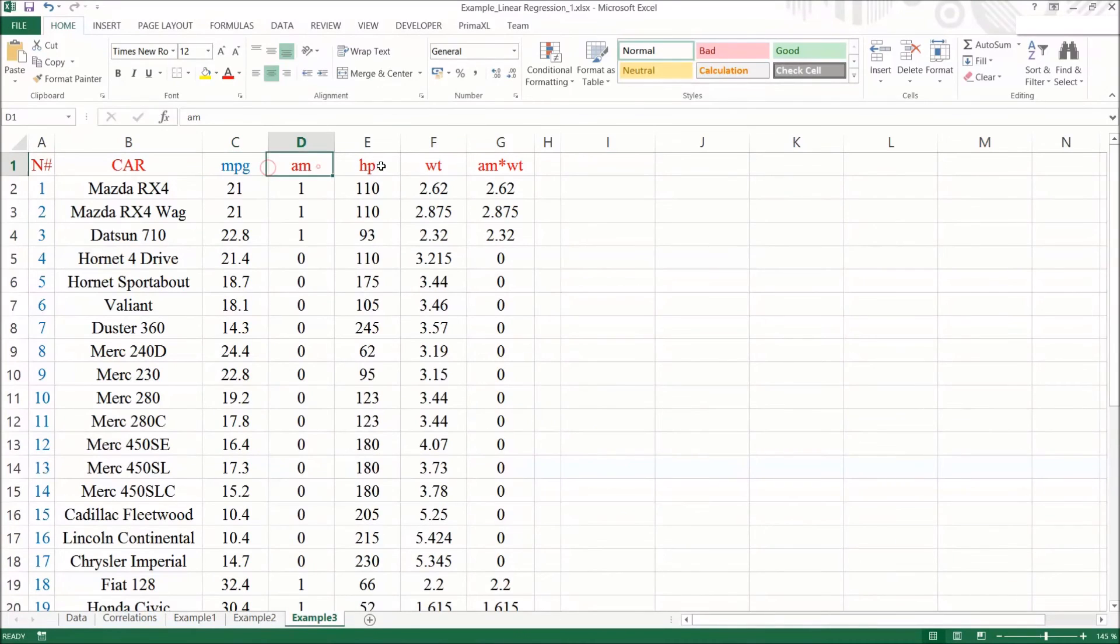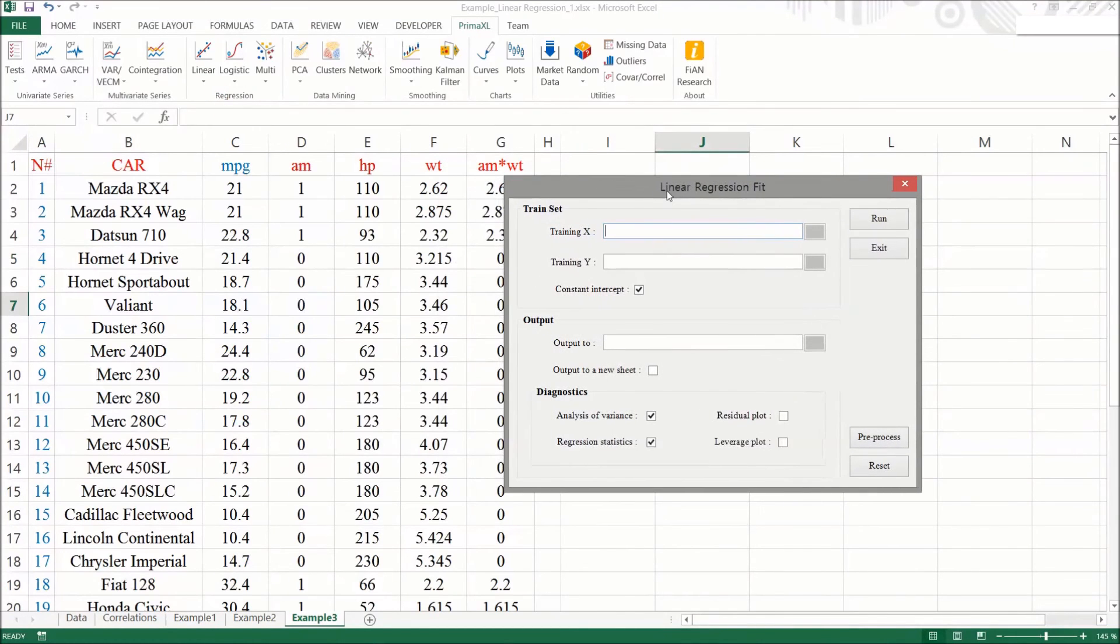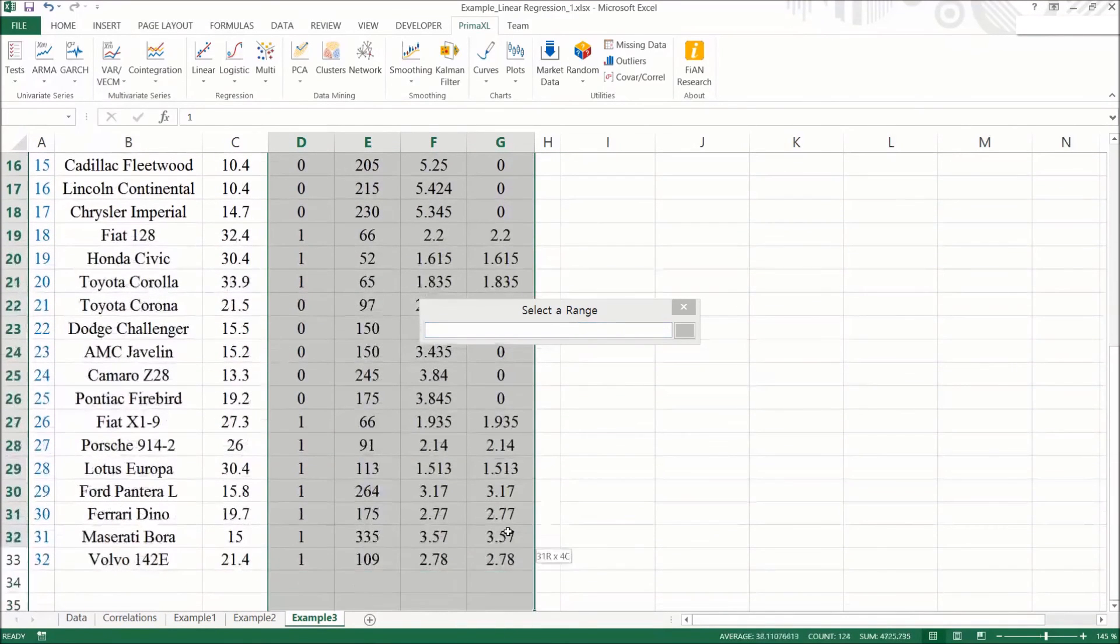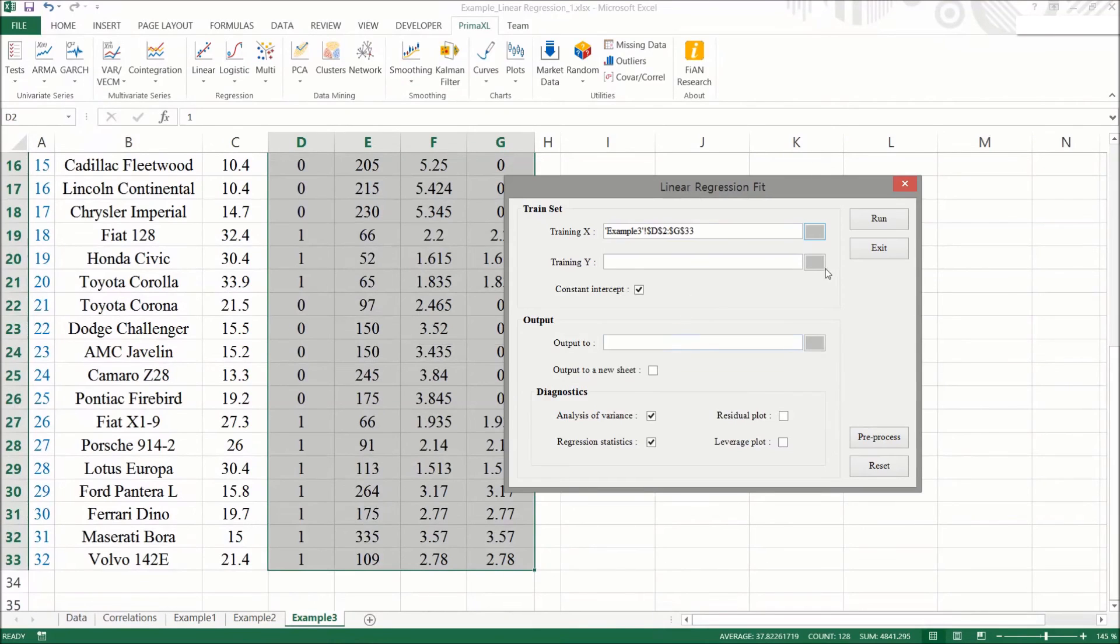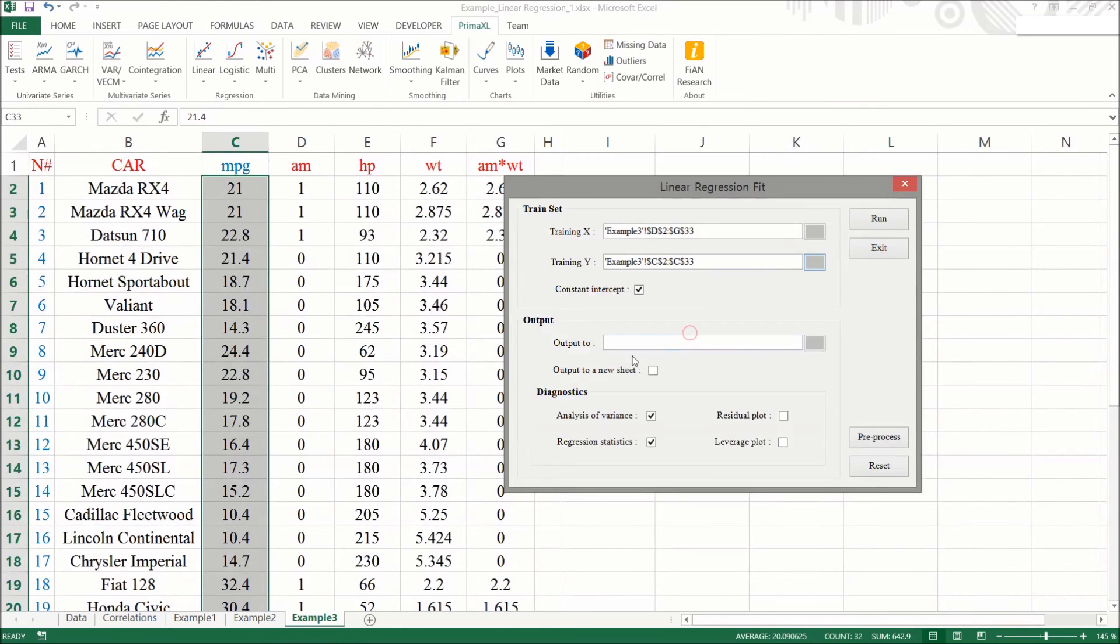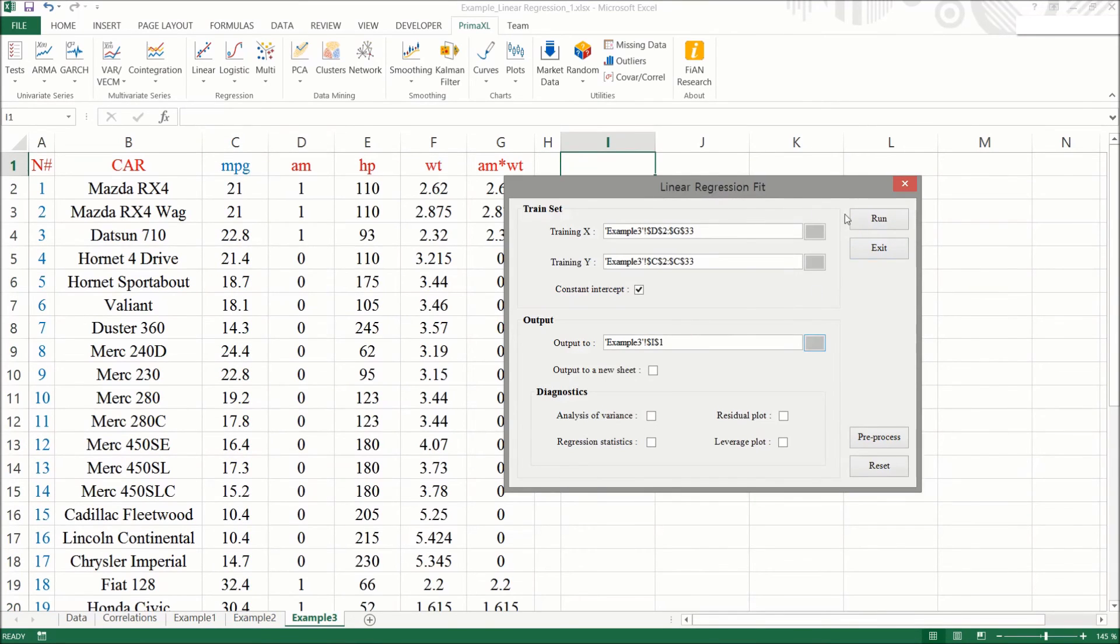Again, we have a simplified data table with only the columns that we are going to use. Please notice this column that corresponds to the interaction term. We bring up the PrimExcel menu form and proceed just like before.